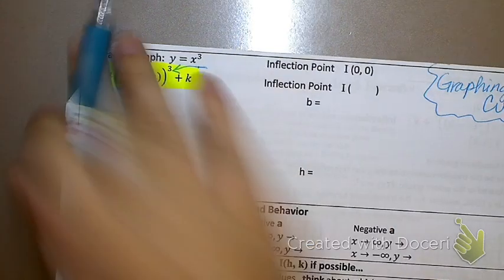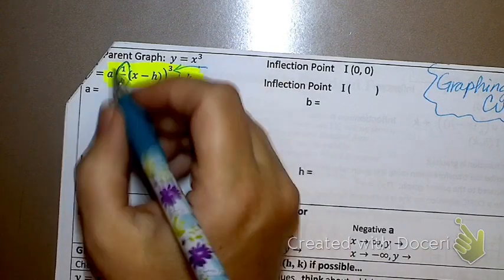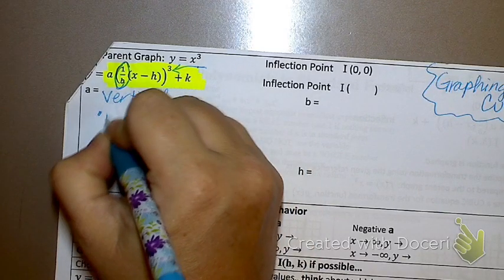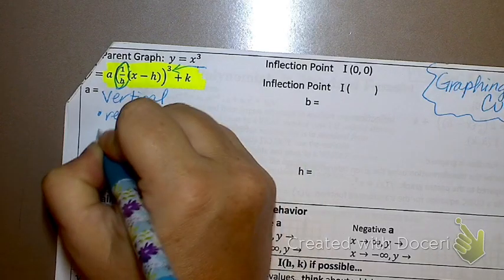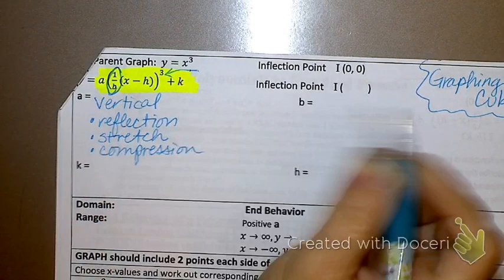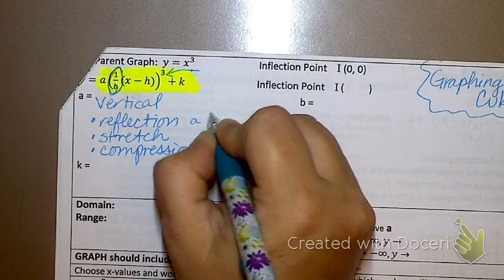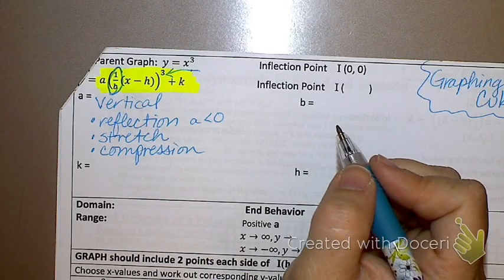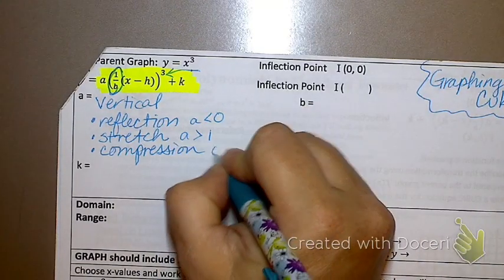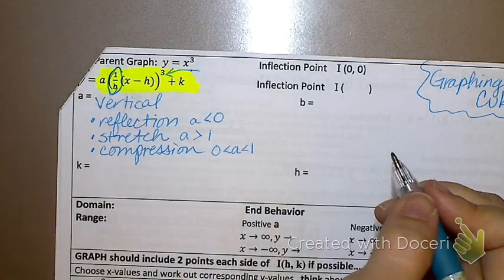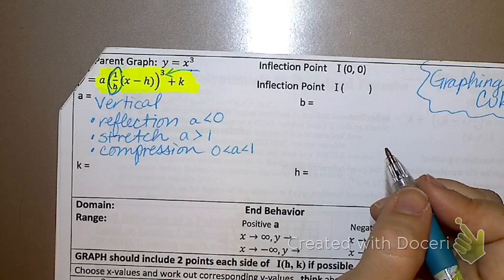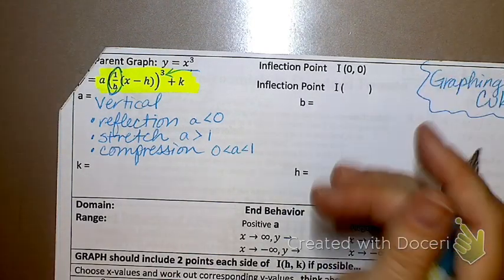Let's talk about things we did last week. What does A represent? It represents a vertical reflection, stretch, or compression. It's a vertical reflection when A is negative — A is less than 0. It's a vertical stretch when A is greater than 1. And it's a vertical compression when A is between 0 and 1, such as one half, three fourths, etc. This should be review for you — just reiterating stuff we learned last week.